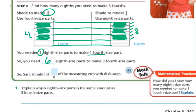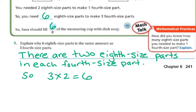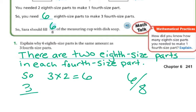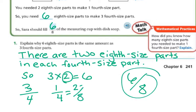Sarah should fill 6/8 of the measuring cup with dish soap. Explain why 6/8 is the same amount as 3/4. There are 2 eighth-size parts in each fourth-size part. So if I'm doing 3 of them and there are 2 in each, 3 times 2 is 6. That's why I know it's going to be 6/8 — because for every 1 fourth, it's 2 of the eighths. 2, 4, 6.